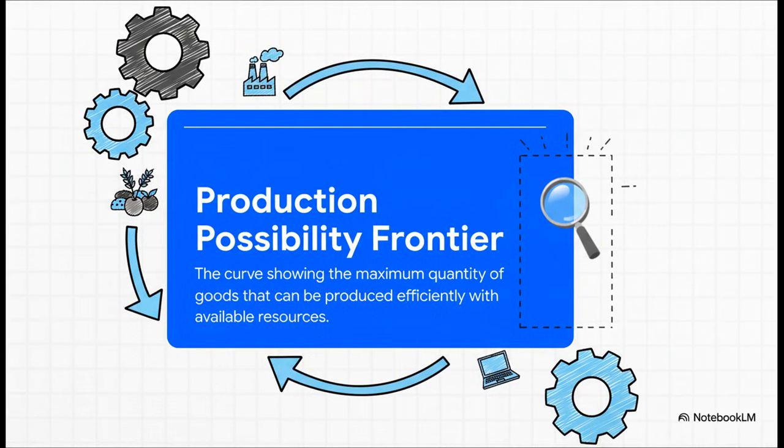And this real-world boundary has a name. It's called the Production Possibility Frontier, or PPF for short. It basically shows every single combination of goods an economy can produce when it's running at absolute peak efficiency.